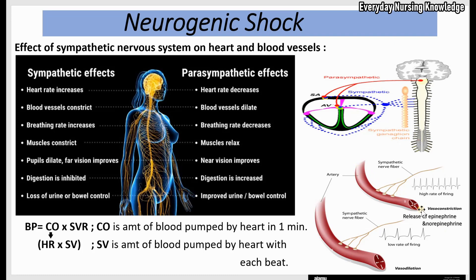When there is damage to the sympathetic nervous system, there is unopposed parasympathetic activity. As a result, heart rate decreases. For blood vessels, there is decreased release of epinephrine and norepinephrine, causing vasodilation. Blood pressure equals cardiac output times systemic vascular resistance. When blood vessels dilate, blood flows through a larger vessel, lowering resistance — so systemic vascular resistance falls, leading to low blood pressure.